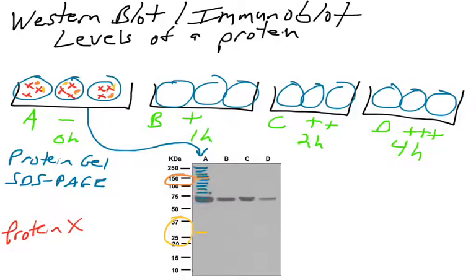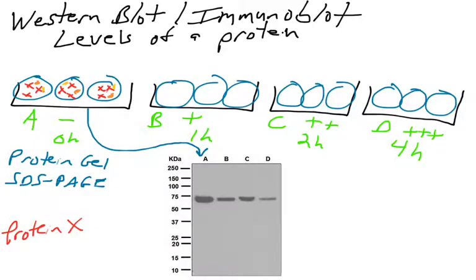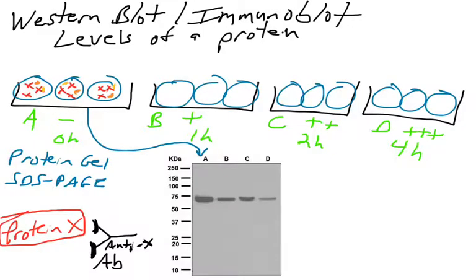Cells contain thousands of proteins of a variety of sizes. When you perform protein extraction and analyze by SDS-PAGE, you get a range of proteins throughout the gel. But we're not interested in all those proteins — only in protein X. To analyze only protein X, we need something that binds to it specifically and very strongly, like a magnet. That something is an antibody, which is why we call these immunoblots — we use antibodies to bind the specific protein we're studying.